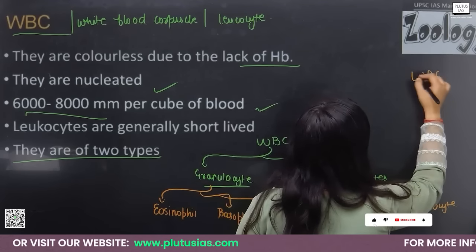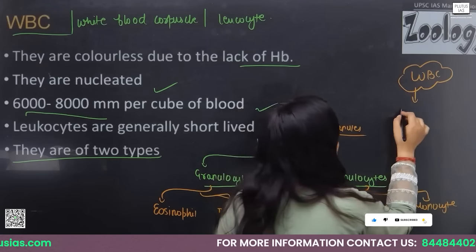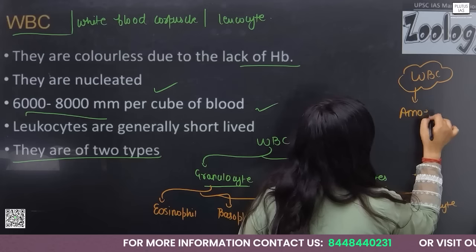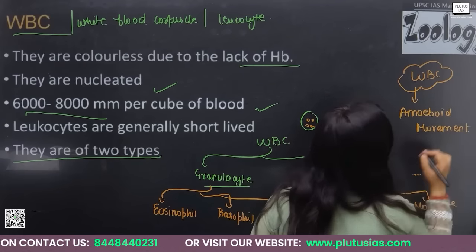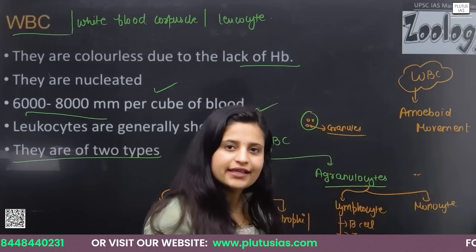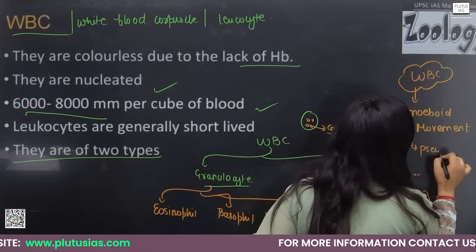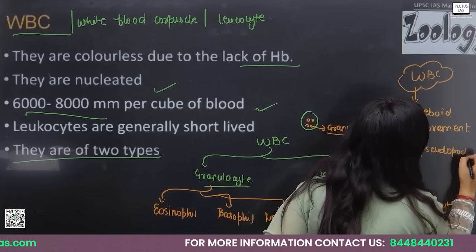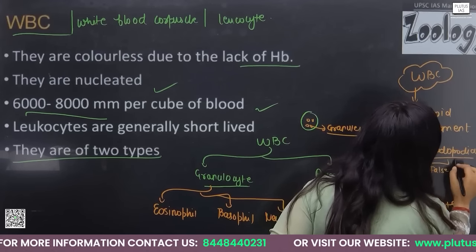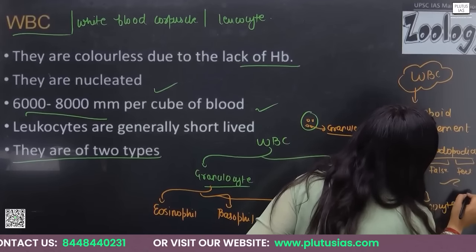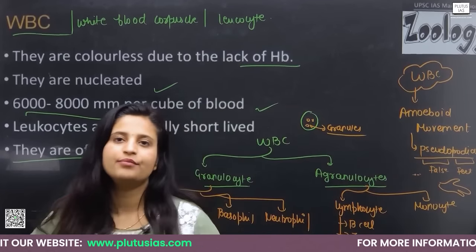WBCs show amoeboid movement by making pseudopodia — 'pseudo' meaning false and 'podia' meaning feet. They make false feet and move through the blood.